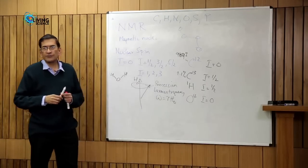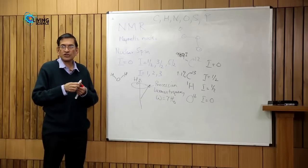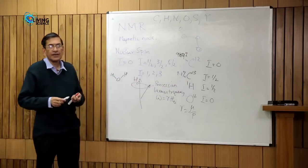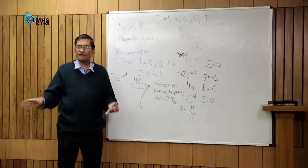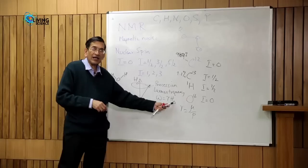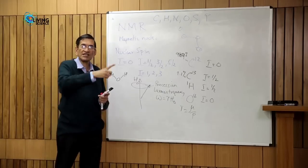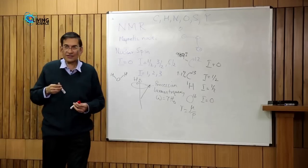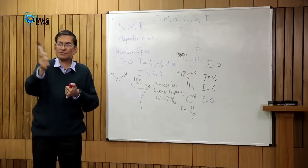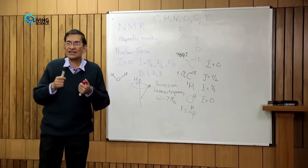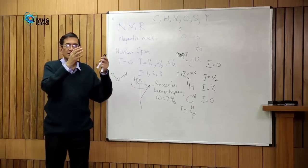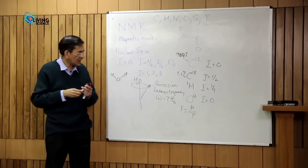There is a constant of proportionality, gamma, which is the magnetogyric ratio — the ratio of the magnetic moment of the nucleus divided by its angular momentum: γ = μ/L. These are fixed nuclear quantities set by nature. This is called the Larmor equation. If you apply a higher magnetic field, these vectors precess faster. That is why NMR spectrometers are described by their frequency — a 300 MHz spectrometer or a 500 MHz spectrometer.